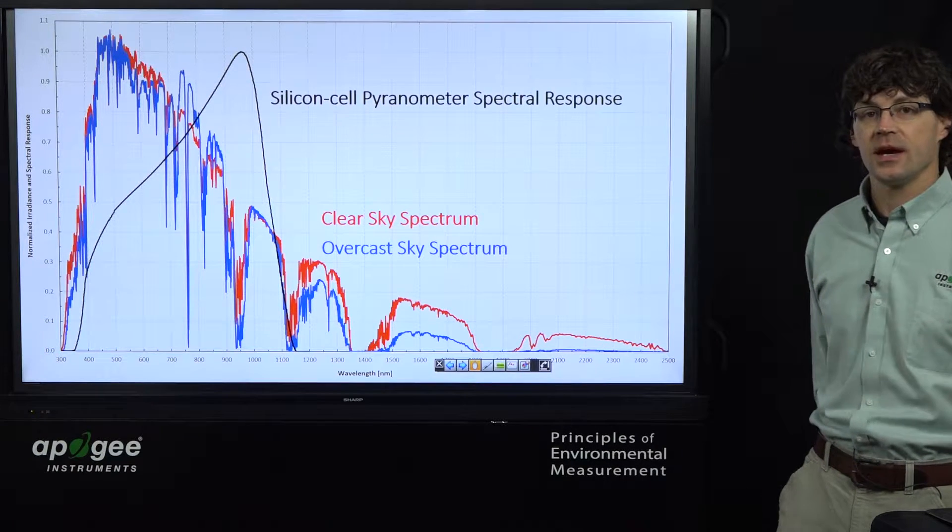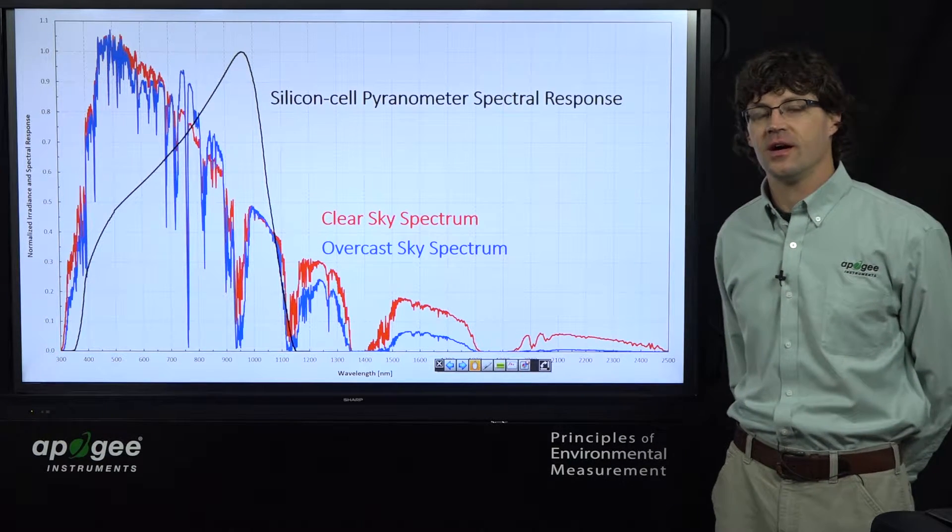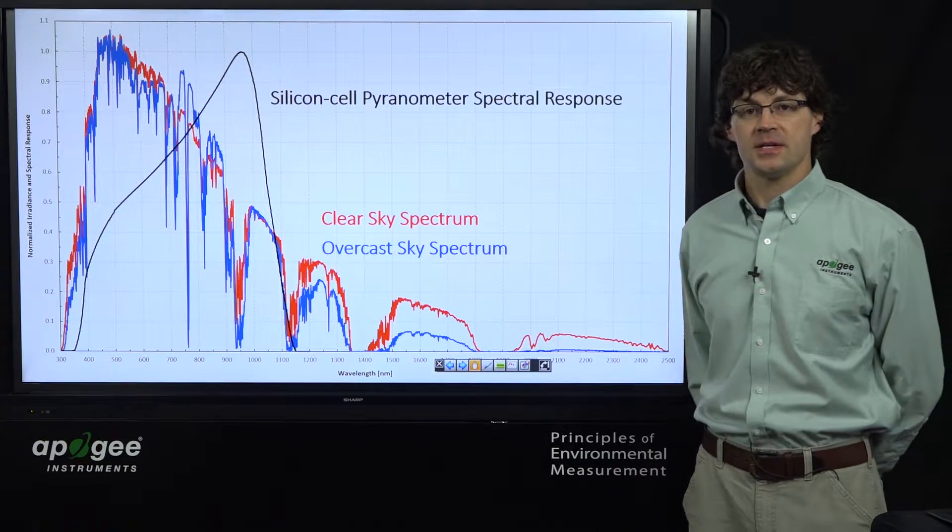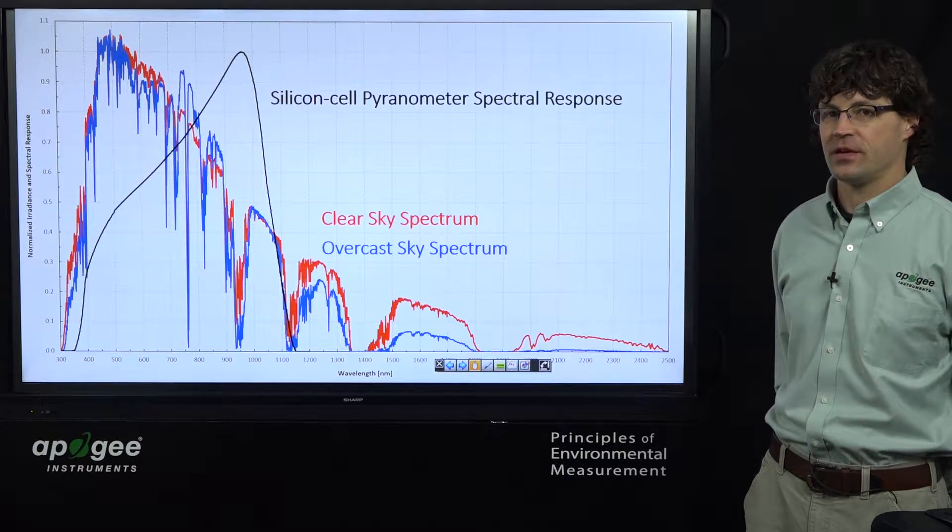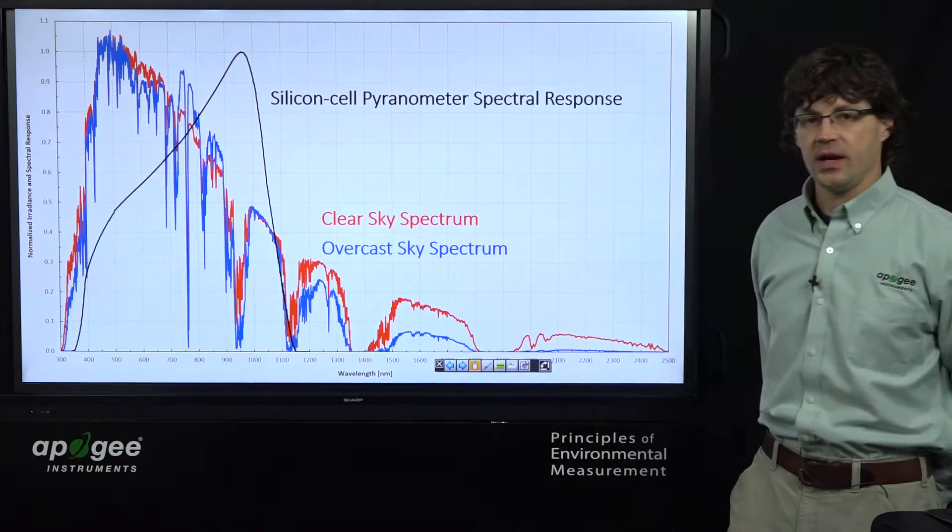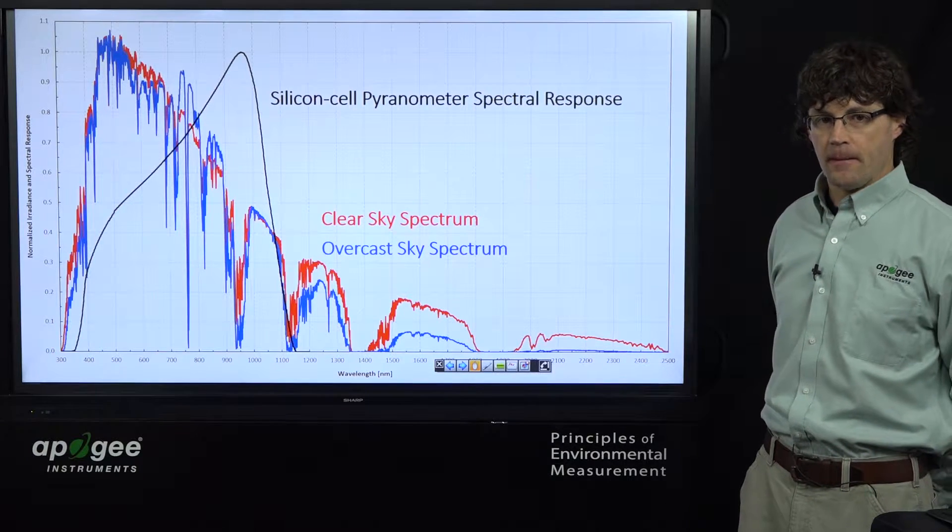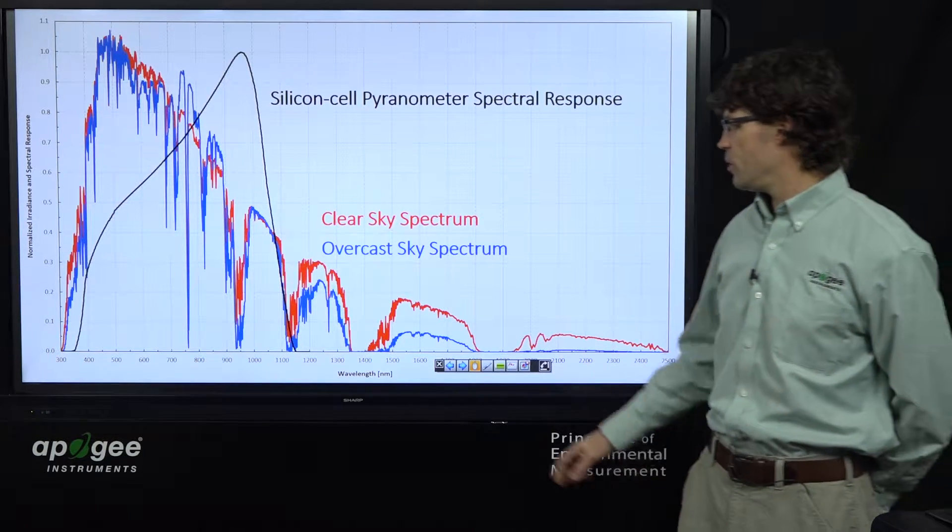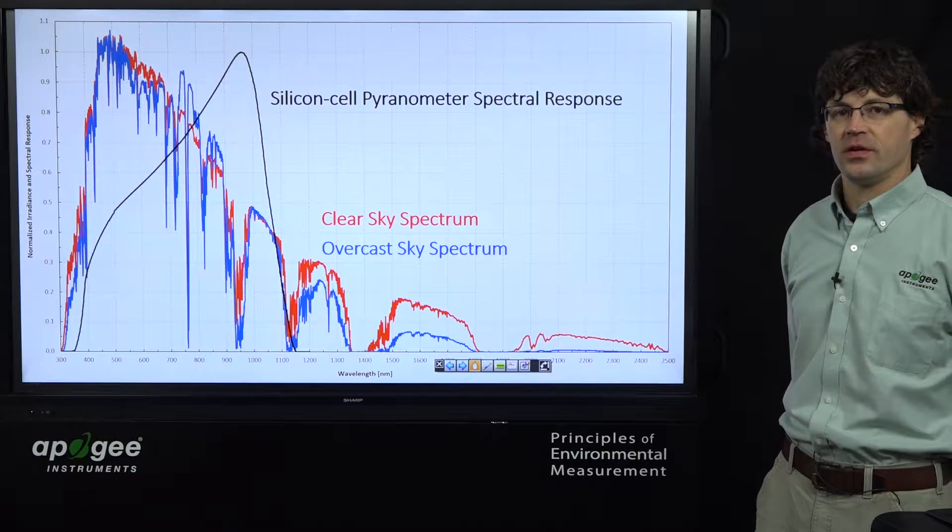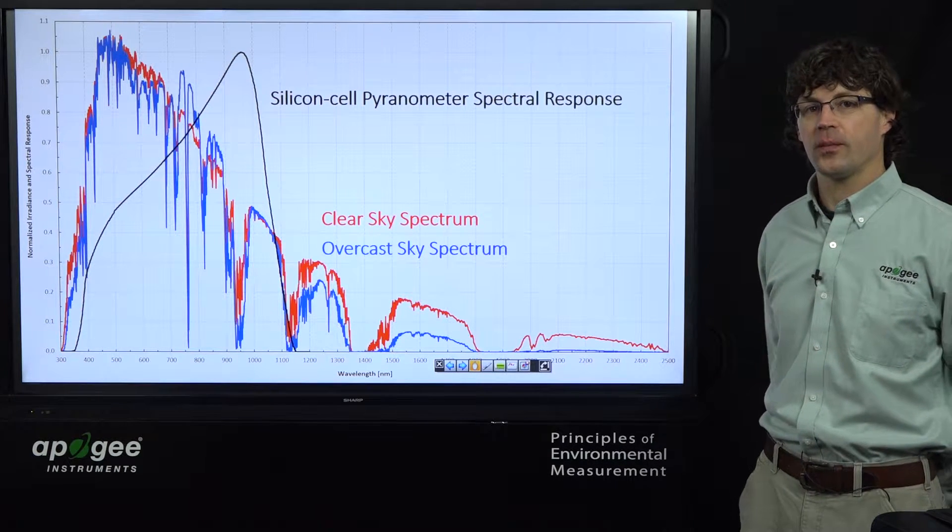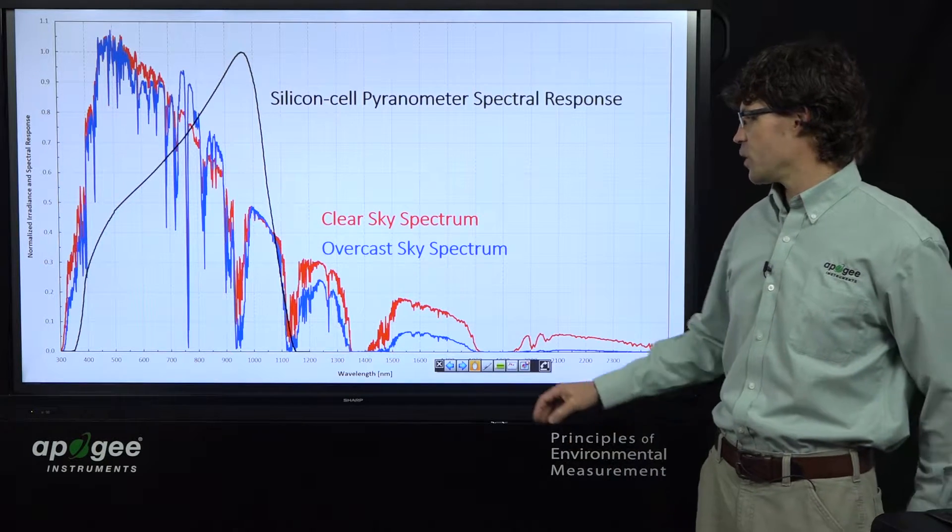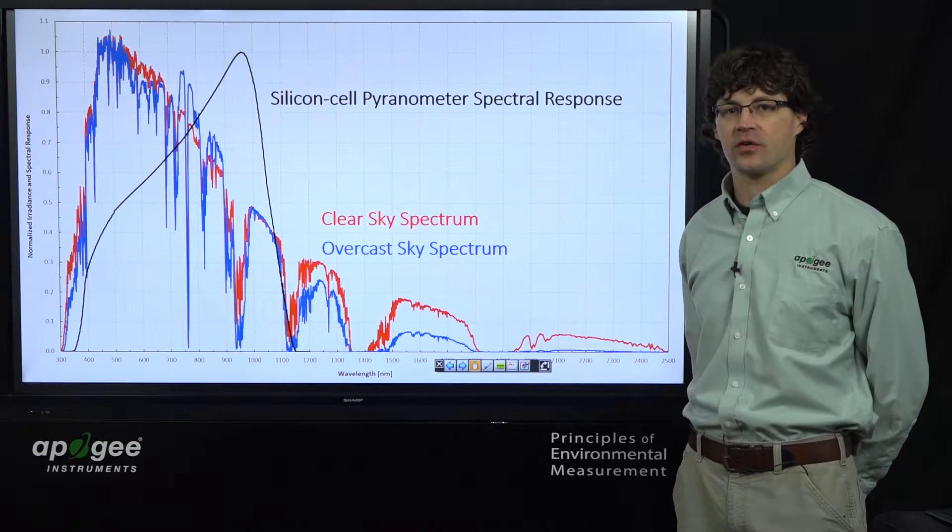The black data set is the spectral sensitivity of a silicon-cell pyranometer. Silicon is sensitive from about 350 to 1100 nanometers. So it captures much of the radiation coming from the sun, but it's not sensitive to the wavelengths out here beyond 1100 nanometers. And when we go from clear sky to overcast sky conditions, often that's where the largest changes in the spectrum occur.